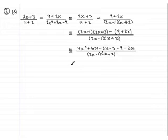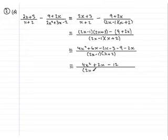Let's clean up the top. We have 4x squared, that's all we've got: 4x squared. Then 6x minus 2x, that's 4x, minus another 2x, that's 2x. And then minus 3 minus 9, well that's minus 12. And all that is going over 2x minus 1 times x plus 2.